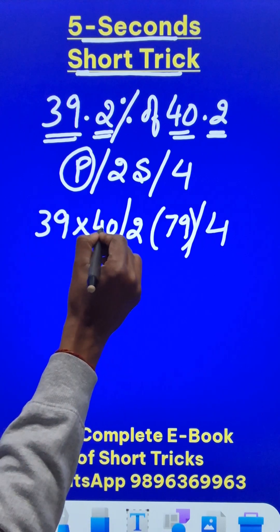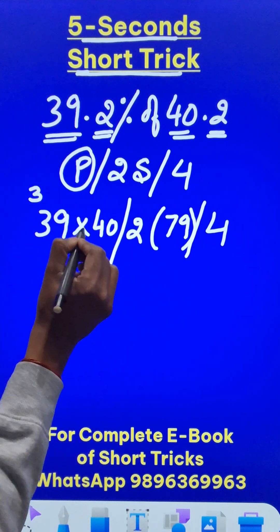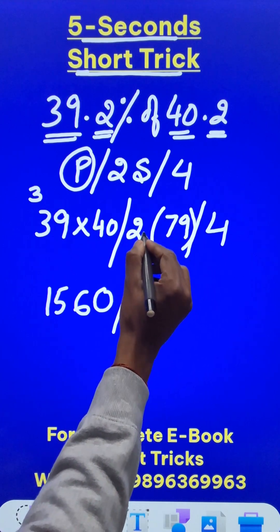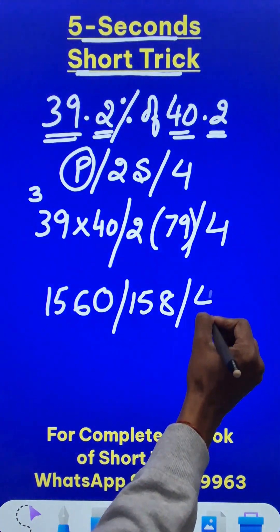Now let's multiply this. This gives a 0. 4 nines are 36. So 3 carried and 4 threes are 12 plus 3, 15. So 1560 and this gives me 140 plus 18, 158 and then a 4.